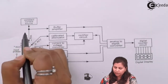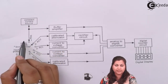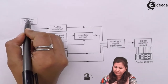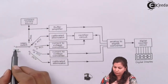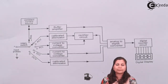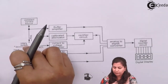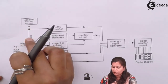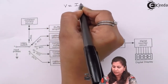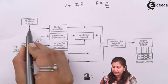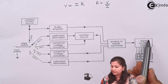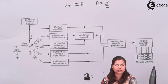We have here a constant current source, because when we want to measure resistance we need the value of voltage and current so that we can apply Ohm's law. So current will be given by this constant current source and voltage is provided from the power supply. So we can measure the resistance by applying Ohm's law: V equals IR, so R equals V by I. Then an amplifier is connected, which is going to amplify this signal, convert it into digital form, and give us a digital output on the LCD screen.